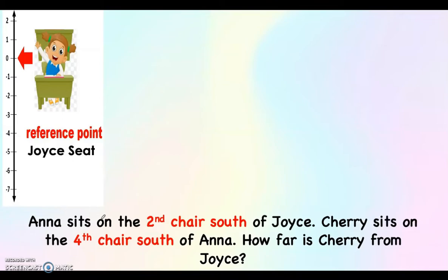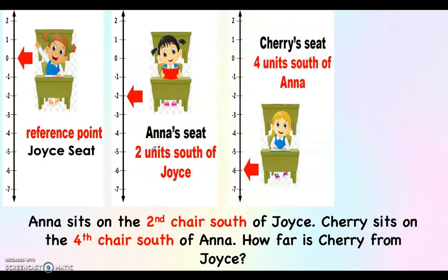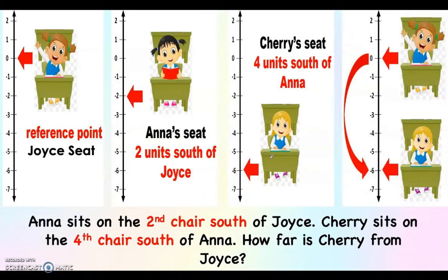Joyce's seat is zero on the number line. Anna's seat is two units south of Joyce, so that is negative two on the number line. Cherry's seat is four units south of Anna, so if Anna is at negative two, we count four units down and it is located at negative six. That means the distance from Joyce's seat to Cherry's seat is six units south, or negative six on the number line from zero.